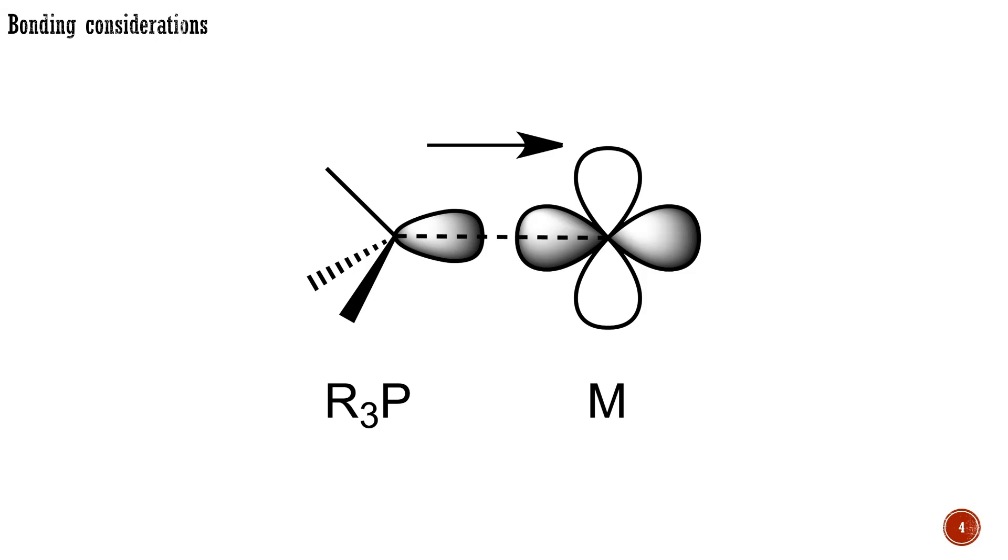Ligands that are primarily lone pair donors, such as phosphines, amines, hydride, and carbanions, increase the electron density on the metal. These ligands fill one coordination site through one point of attachment and are called monohaptoligands, designated as η¹, which shows the number of adjacent ligand atoms directly bound to the metal.